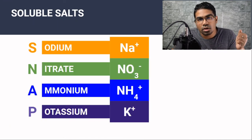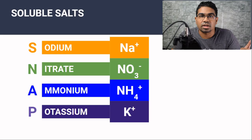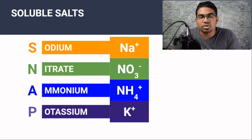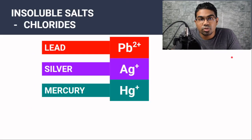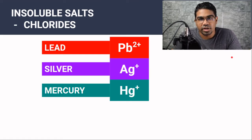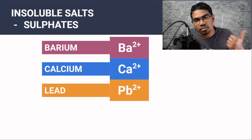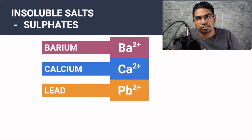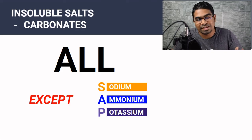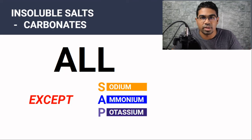Let's do a quick recap. For soluble salts, all SNAP salts are soluble — sodium, nitrate, ammonium, and potassium salts are always soluble. Insoluble chlorides are PAH: lead, silver, and mercury. The insoluble sulfates are BACCAP: barium, calcium, and lead. And all carbonates are insoluble except for those that form salts with SNAP — sodium, ammonium, and potassium carbonate are soluble.